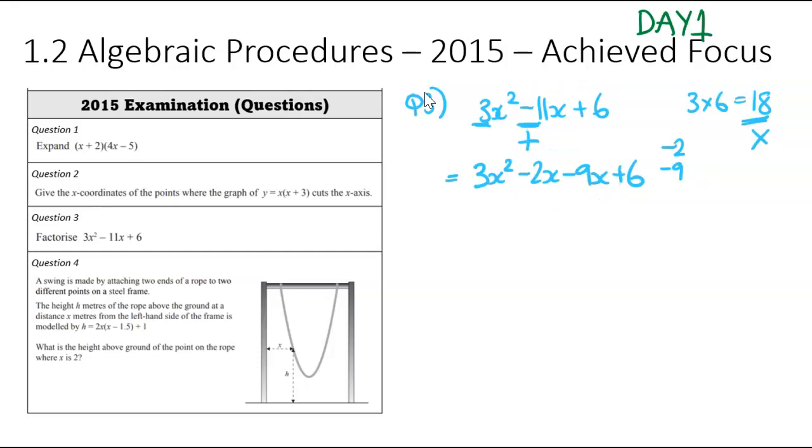I'm now going to factorize by groups. That's why it's called the grouping method. This part here, what do they have in common? Only an x, leaving us with 3x - 2. This part here is next. What do they have in common? It looks like they've got a -3 in common, which would leave 3x - 2 as well. I know I've done this right because I'm getting the same bracket twice, so I haven't stuffed up. I'm going to jot down that bracket, 3x - 2. I'm not going to write it twice, just once. The leftover bits, x and -3, they're going to come together to form the second bracket.